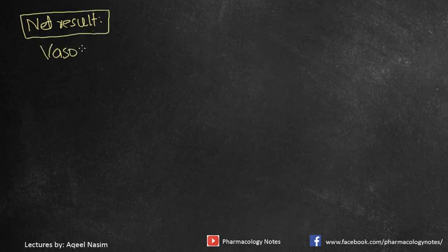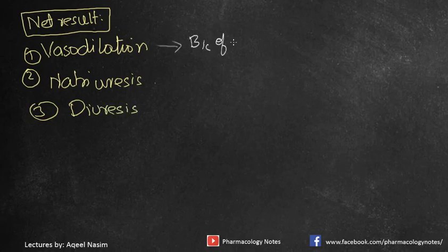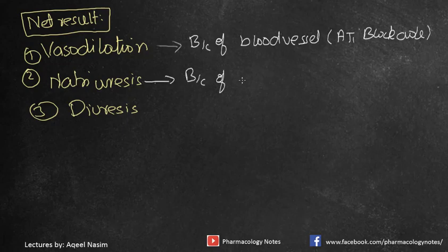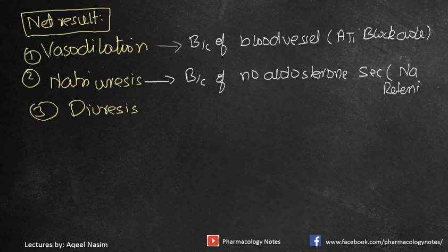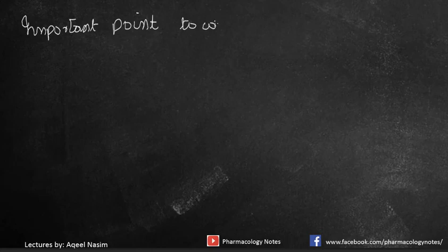The net result of ARBs is: vasodilation — due to AT1 blockade at blood vessels, preventing angiotensin 2 from binding; natriuresis — due to no aldosterone secretion, resulting in renal loss of sodium; and diuresis — due to renal loss of water.